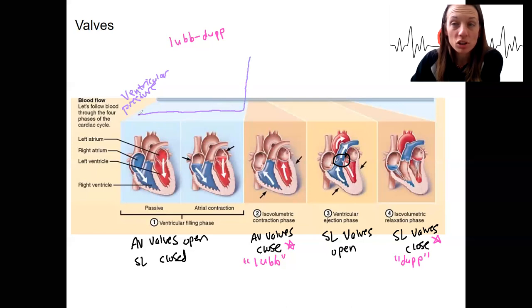Super high pressure because it's isovolumic. Nothing's leaving. And then as we have ejection occur, we're going to start to have reduced pressure again. That's it. That's ventricular pressure. We'll look at some other places later.